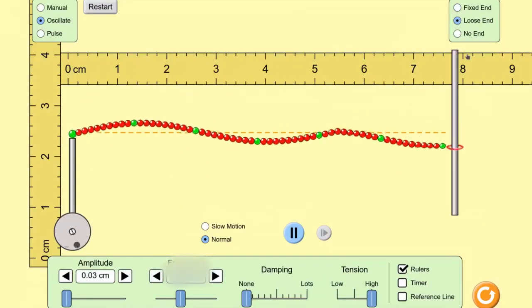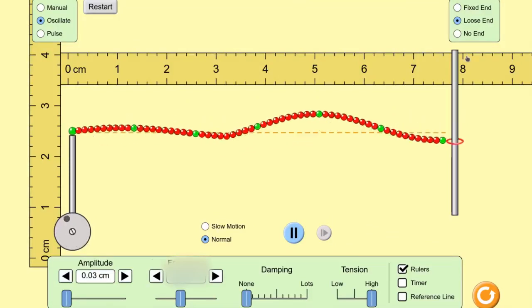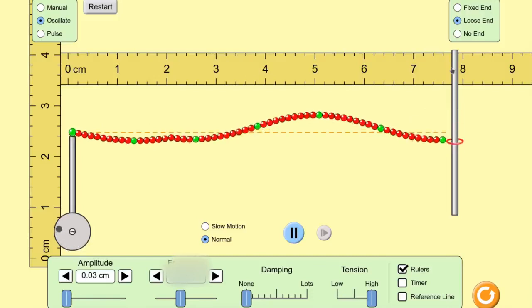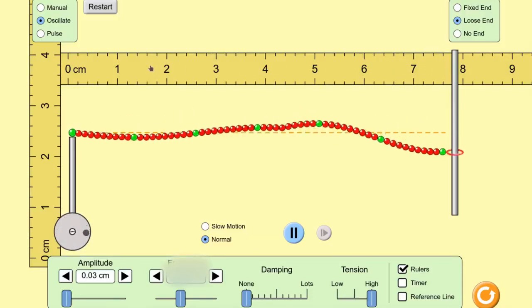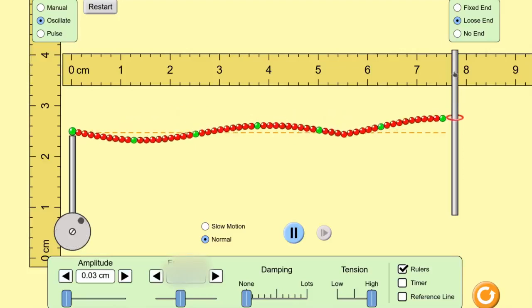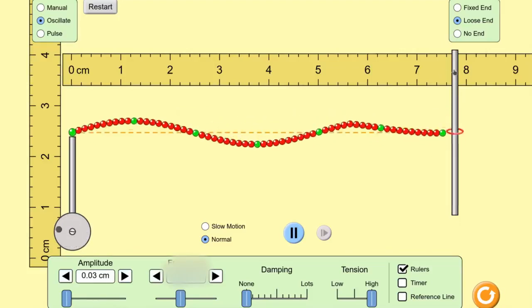Finally, we change the boundary condition from a fixed end to a loose end. Note that this will slightly change the distance between the driver and the loose end, so you will have to re-measure that distance.